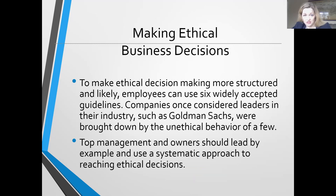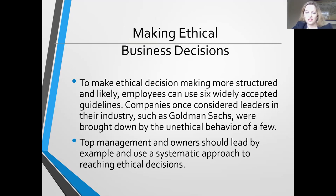Making ethical business decisions: employees can use six widely accepted guidelines. Companies once considered leaders in their industry, such as Goldman Sachs, were brought down by the unethical behavior of a few, according to this book. It could also be a company culture — as you saw in the Enron video, the board of directors and others were part of a widespread deception, while employees were not necessarily aware of what was going on with their accounting practices. Top management and owners should lead by example and use a systematic approach to reaching ethical decisions so everyone is aware of them.